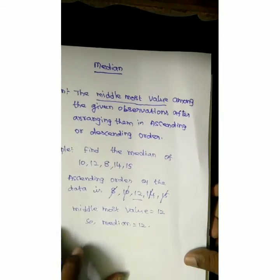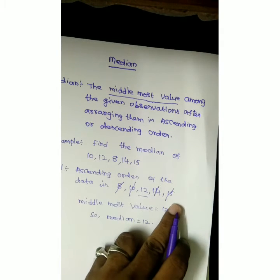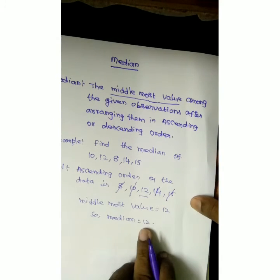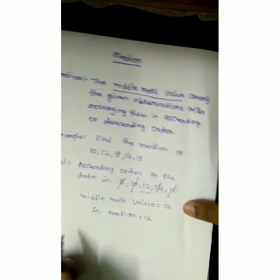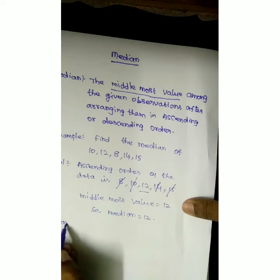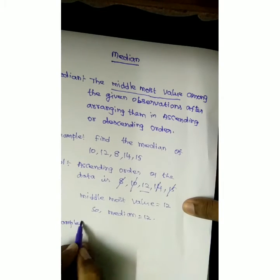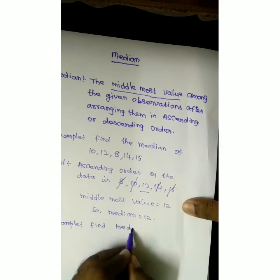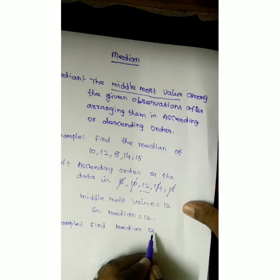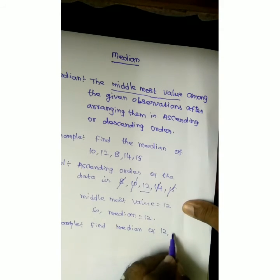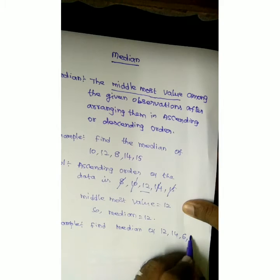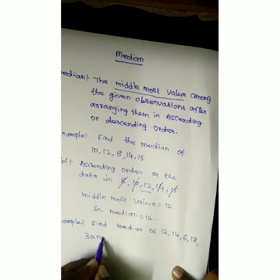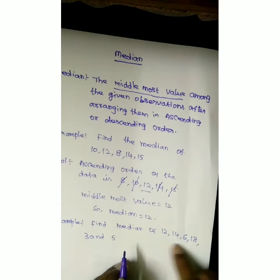This is when an odd number of observations is given — that is, 5 observations. With 5, 7, or any odd number of observations, you will get only one median. Let us take one more example. Find the median of 12, 14, 6, 18, 3, and 5. So, there are 6 observations.